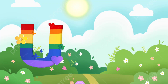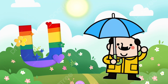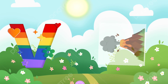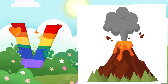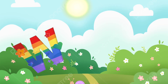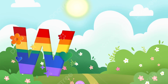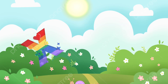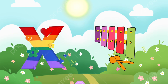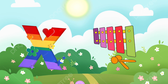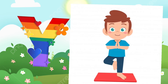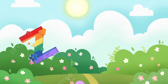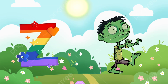U. U is for umbrella. V. V is for volcano. W. W is for wave. X. X is for telephone. Y. Y is for yoga. Z. Z is for zombie.